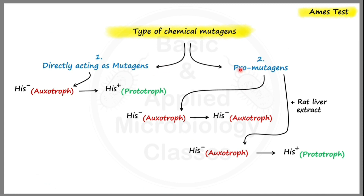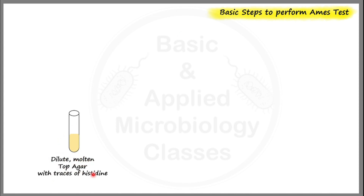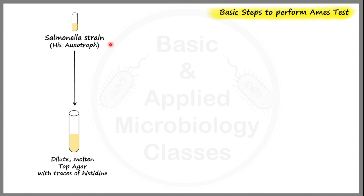Now let's cover all the steps followed in the laboratory to perform the Ames test. First, we take a tube containing dilute molten top agar, which has only a small amount — or traces — of histidine. To this top agar tube we add the Salmonella strain with the desirable mutations, specifically the histidine auxotrophic strain. Along with the Salmonella tester strain, we also add rat liver extract, because there is a possibility that the test chemical may be a pro-mutagen requiring metabolic activation.